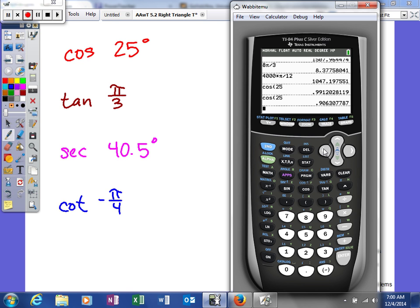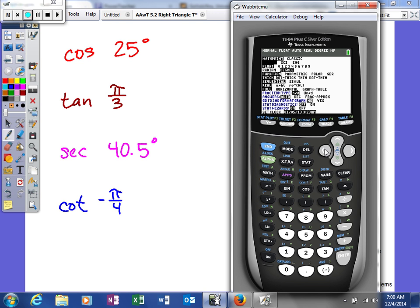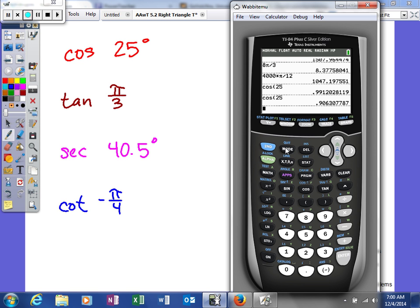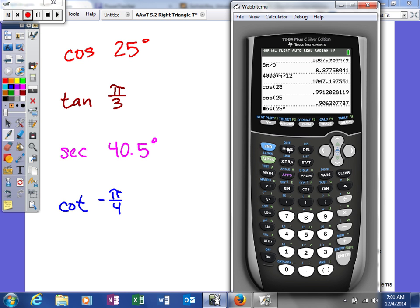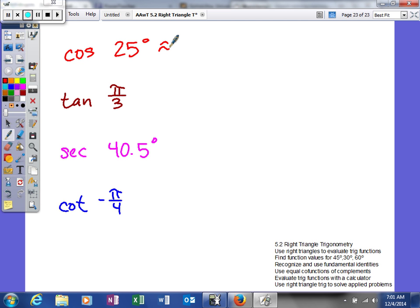Now if you don't want to change the mode every time you have to do something, you can do cosine of 25 and then go back to that angle menu. The third one down is radians, but we actually want degrees. So even though my calculator is in radian mode, if I put a degree symbol on there, I get the exact same thing. If I tell my calculator that my angle is in degrees, it will give me the correct answer. So we get approximately 0.906.